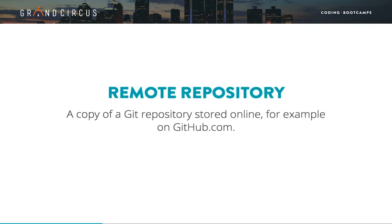A Remote Repository is a copy of your project that you set up on GitHub.com. It's called Remote because it's stored somewhere else, away from your computer. It generally has the same files and history, but it's copied out on the web.